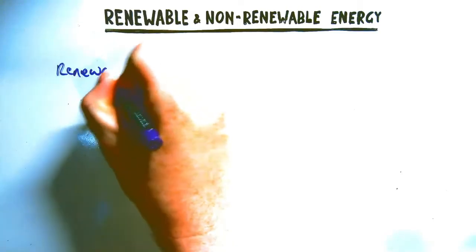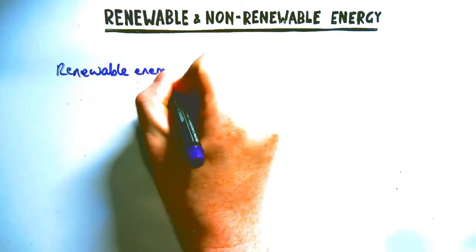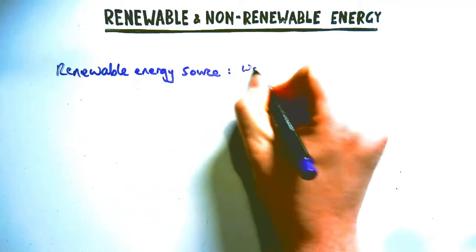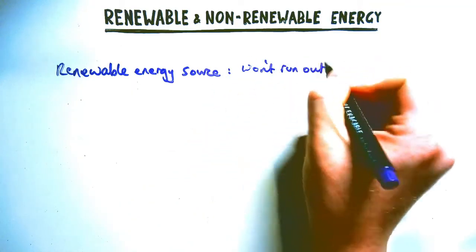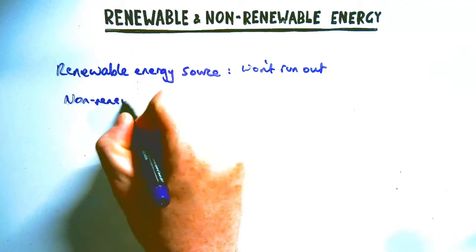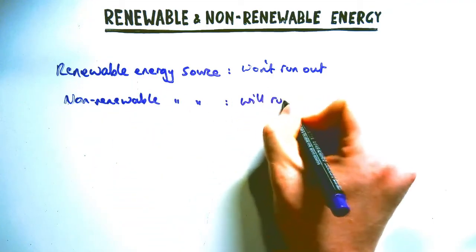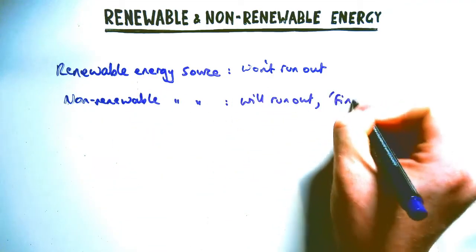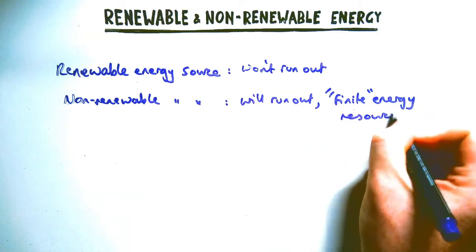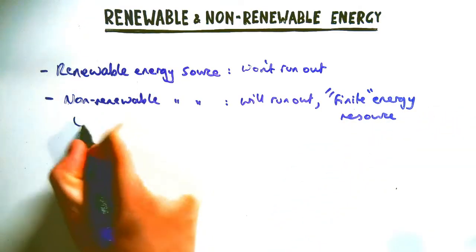Renewable energy and non-renewable energy might seem like an easy topic, but you need to know them inside out to get full marks in an exam. A renewable energy source is an energy resource that won't run out, as opposed to a non-renewable energy source that will run out — sometimes called a finite energy resource.